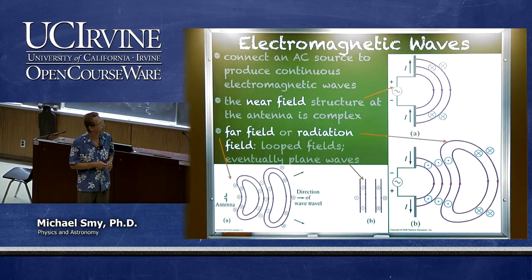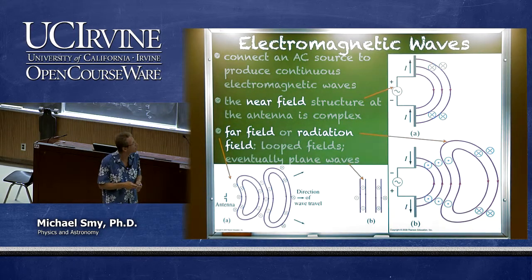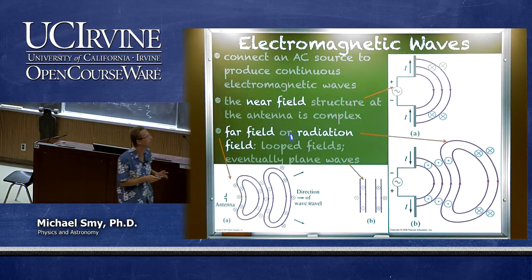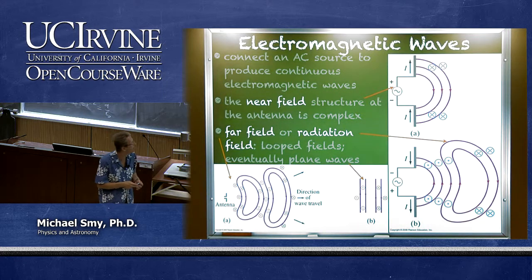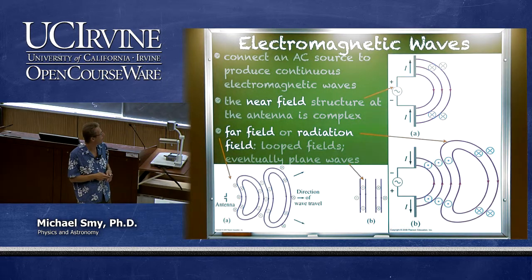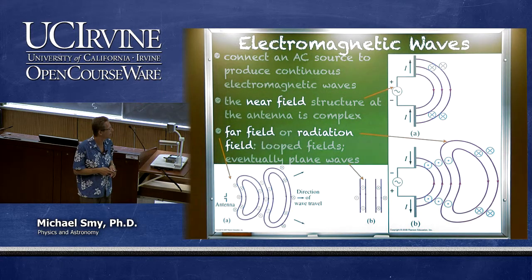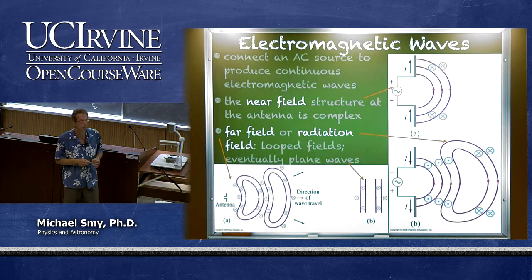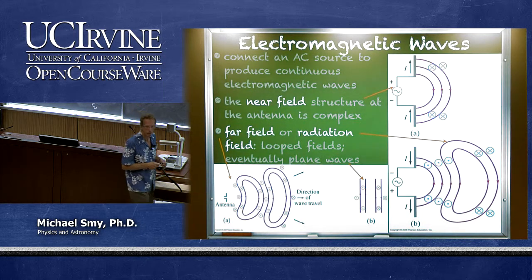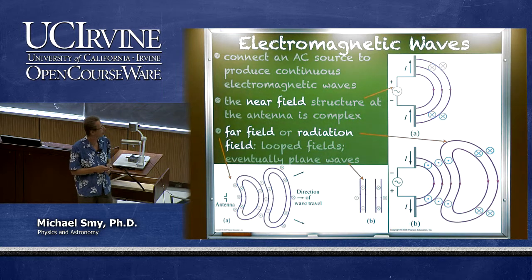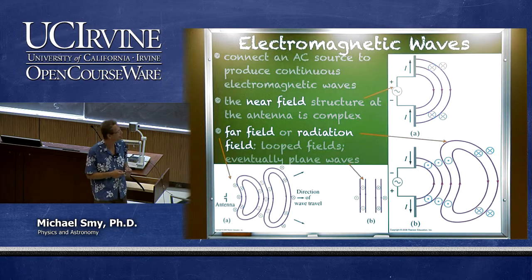Near the antenna the structure is very complex, with funny-looking loops for the electric field. But far away, after the fields separate from the antenna and travel out in space, things simplify. In the far field, electric and magnetic fields are perpendicular to each other and perpendicular to the direction of wave travel. In other words, electromagnetic waves are transverse waves — but transverse waves with two kinds of displacement: the electric field and the magnetic field.